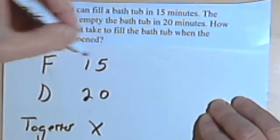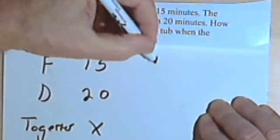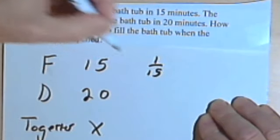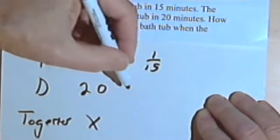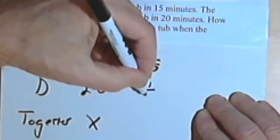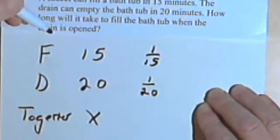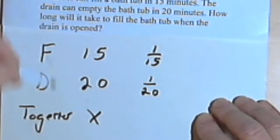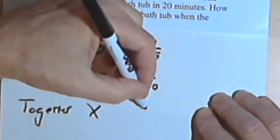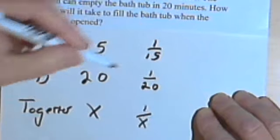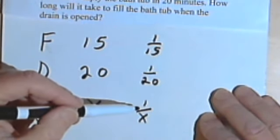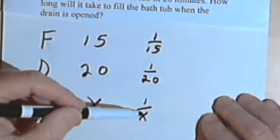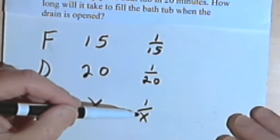So in one minute, the faucet can do one fifteenth of the job of filling the bathtub. In one minute, the drain can do one twentieth of the job of emptying the bathtub. And together, in one minute, one over x of the job of filling the bathtub will be accomplished. Or one over x of the bathtub will be filled.